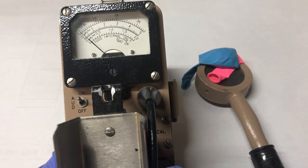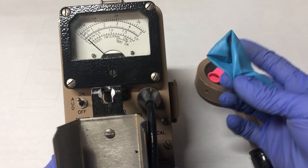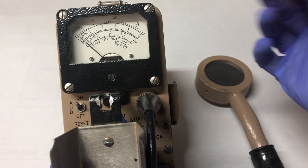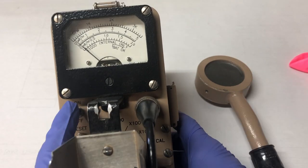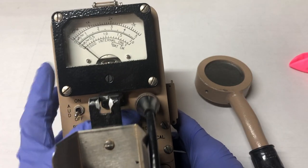We're going to be using the green as control, set that off aside, blue as test one and pink as test two. Let's turn off the Geiger counter and get everything set up.